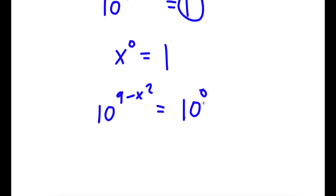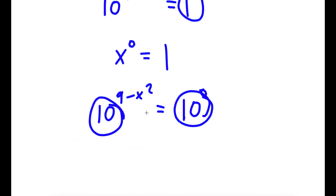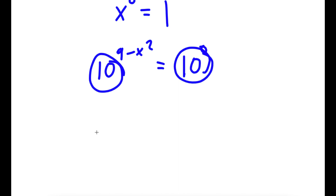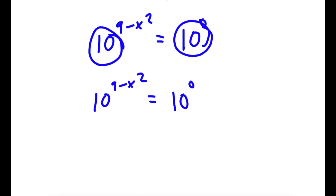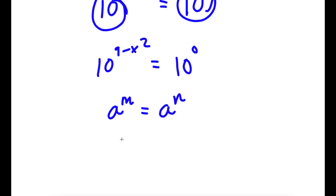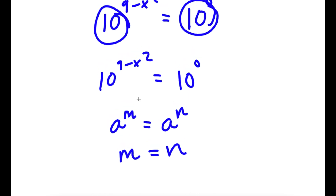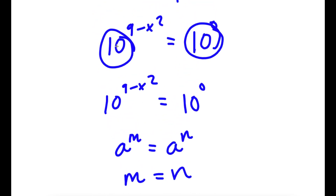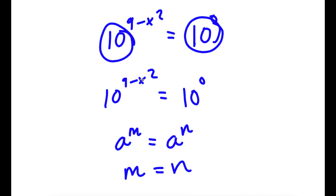The reason I did this is so that the two bases are the same — they're both 10. If I have something in the form a to the power of m is equal to a to the power of n, this means that m is equal to n. Because both of our bases are 10, our exponents are going to be equal to each other as well, meaning 9 minus x squared is going to be equal to 0.